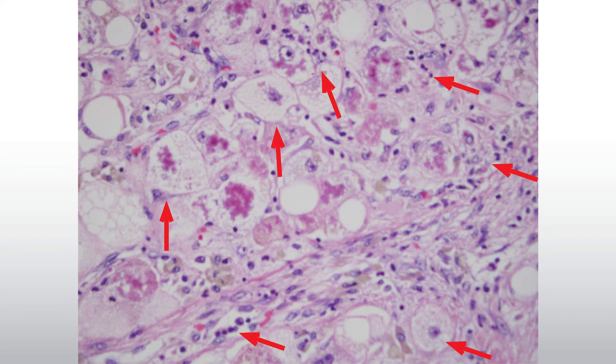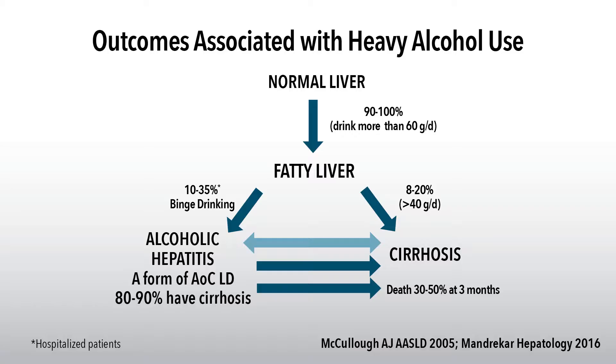Histologically, we see foamy cell degeneration, inflammatory changes, Mallory's hyaline, and a hint of what we call sclerosing hyaline necrosis. These features help with the diagnosis of alcoholic liver disease, alcoholic hepatitis, and the severity of that liver injury.